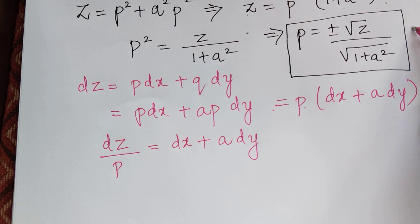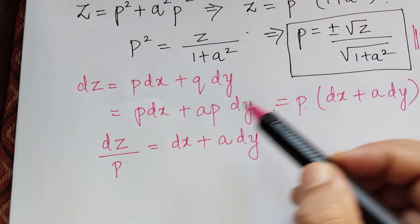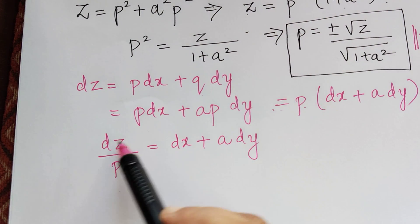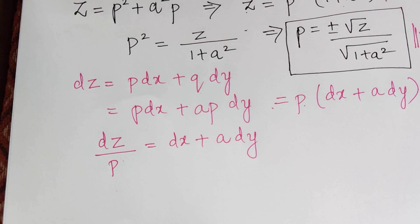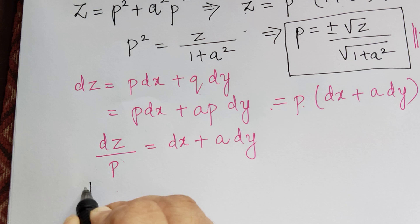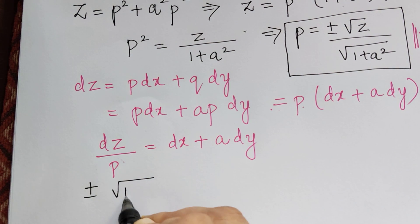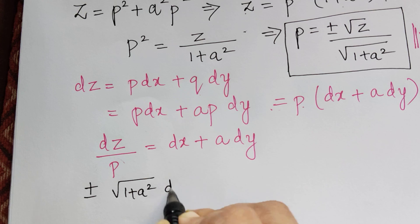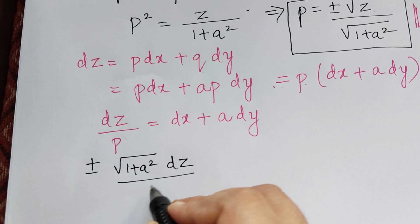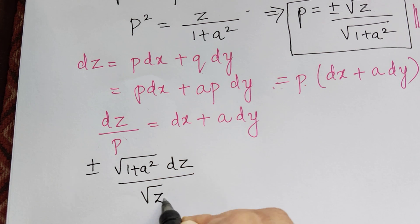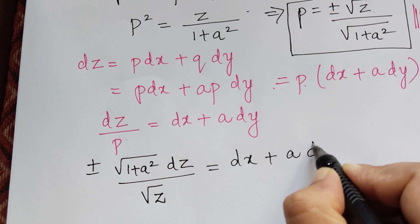Now we shall substitute the value of p. Because we have 1 by p, the denominator is written in the numerator and the numerator in the denominator. So we will have plus or minus square root of 1 plus a square, dz divided by root z, equal to dx plus a dy.